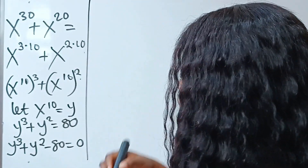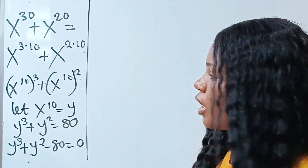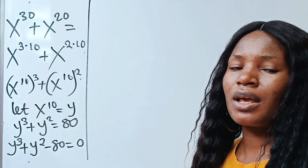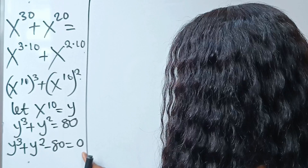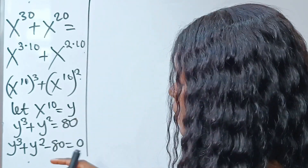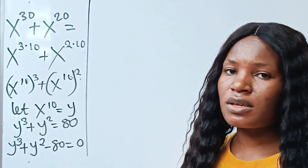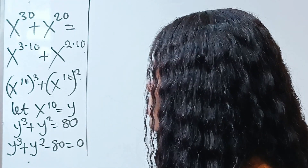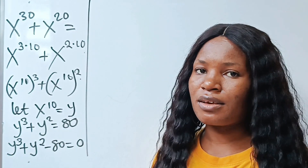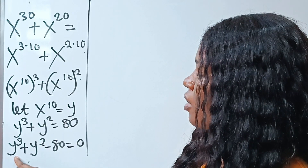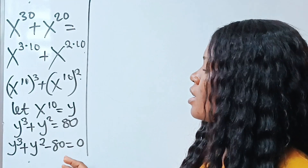I've said this before — if you want to know how to solve cubic polynomials of any type, search through this channel; I'll drop the link in the comment section or description box. The particular method I want to use here is the trial-and-error method. Using trial and error, you find one value of y, then use it to divide synthetically. The value of y that makes the equation true is y equals 4.